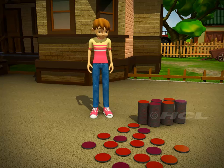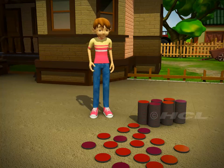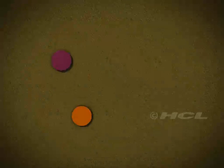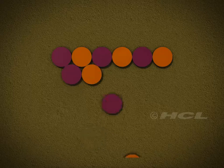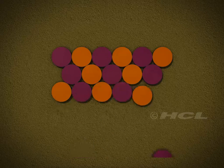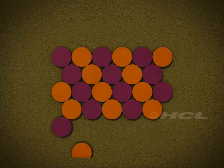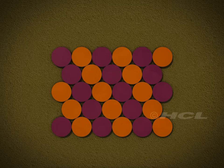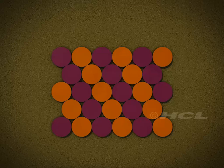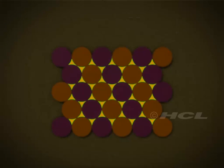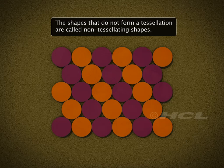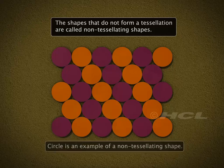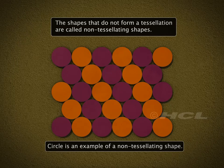Let's now try circular tiles. Here is the pattern we can form using circular tiles. Do the circular tiles form a tessellation? No, they don't. There are gaps between these tiles. The shapes that do not form a tessellation are called non-tessellating shapes. A circle is an example of a non-tessellating shape.